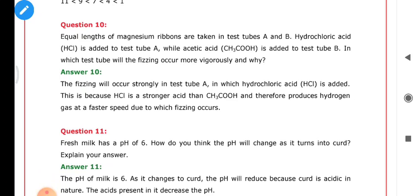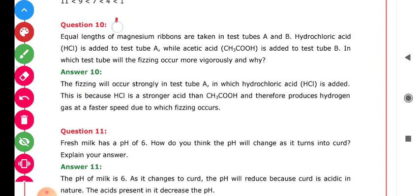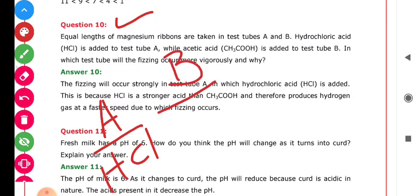Question 10: Equal lengths of magnesium ribbon are taken in test tubes A and B. Hydrochloric acid (HCl) is added to test tube A, while acetic acid (CH3COOH) is added to test tube B.